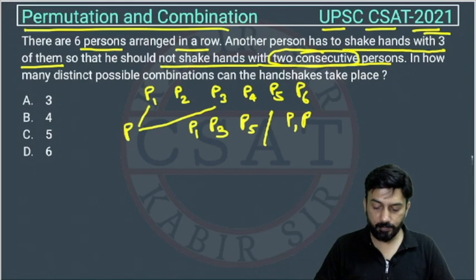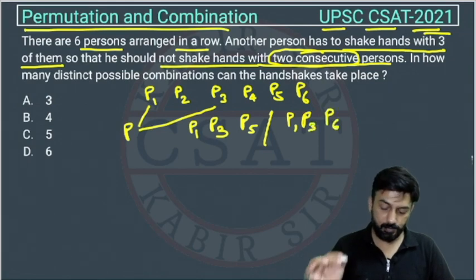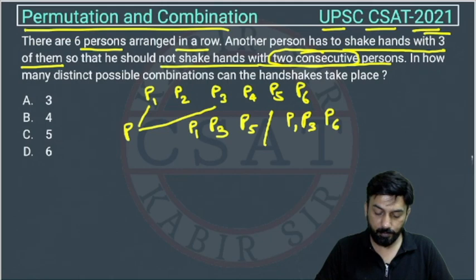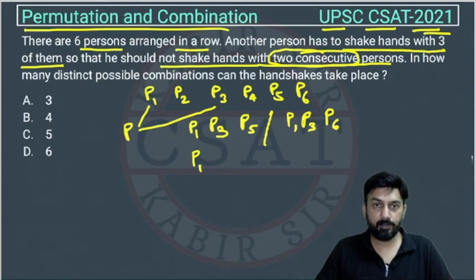The other possibility is he is shaking hands with P1, and then he is shaking hands—he cannot shake hands. Suppose he is leaving P3 and now shaking hands with P4, and then he will shake hands with P5.